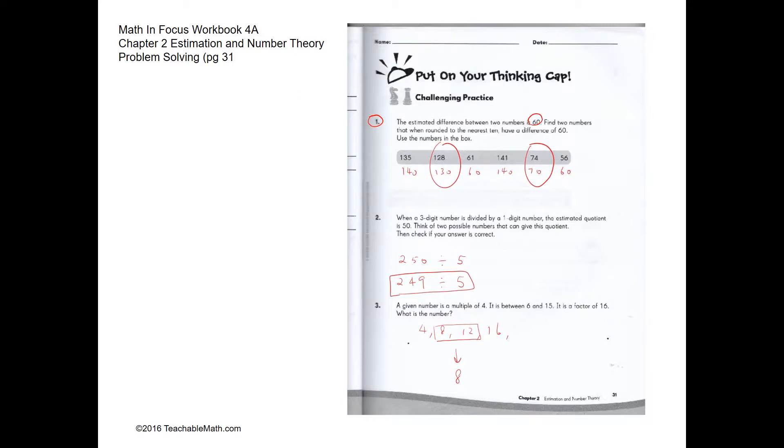We're going to round the numbers up to 10. 135 to the nearest 10 will be 140. 128 to the nearest 10 will be 130, and we're doing the same for the rest of the numbers. We scan through the numbers and realize that the difference between 130 and 70 is 60, which is what we want. So the numbers will have to be 128 and 74.